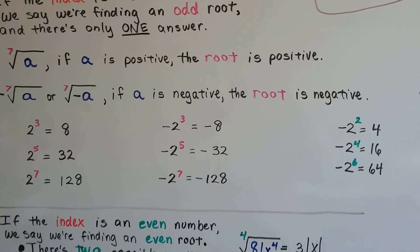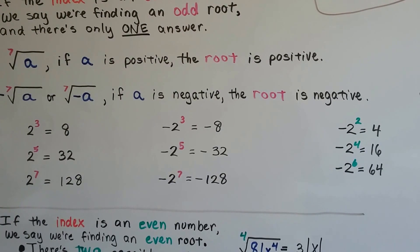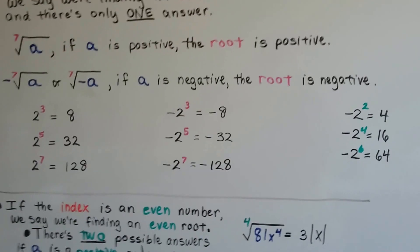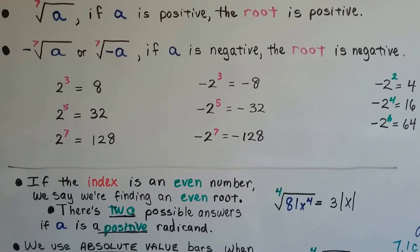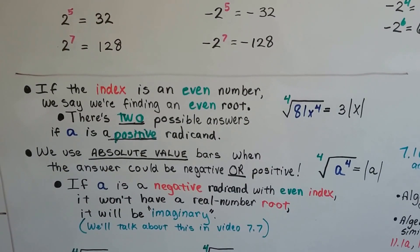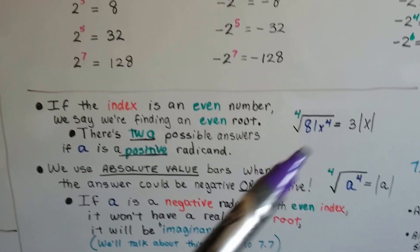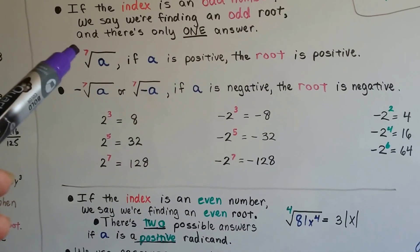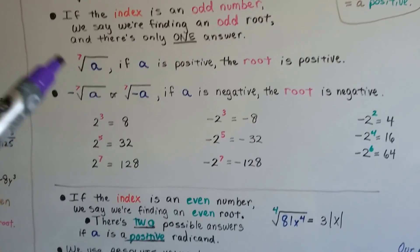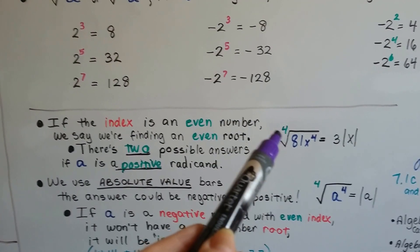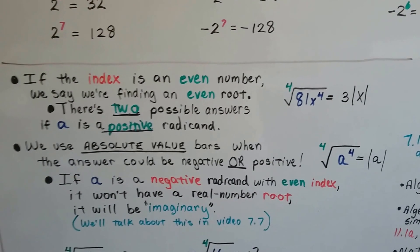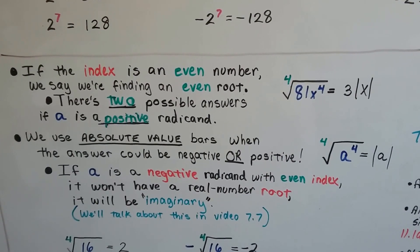I know that's confusing — it'll make sense. If you didn't get it, maybe you can watch the video again. Now, if that index number is an even number — we had odd numbers like 3, 5, 7, 9, 11 — so now when the index is an even number like 4, 6, 8, 2, or 10, we say we're finding an even root, and there are two possible answers if A is a positive radicand. If this is a positive, we can have either a negative or a positive for our answer, because negative 8 times negative 8 makes a positive 64. So when this is an even number, we have two possible answers.